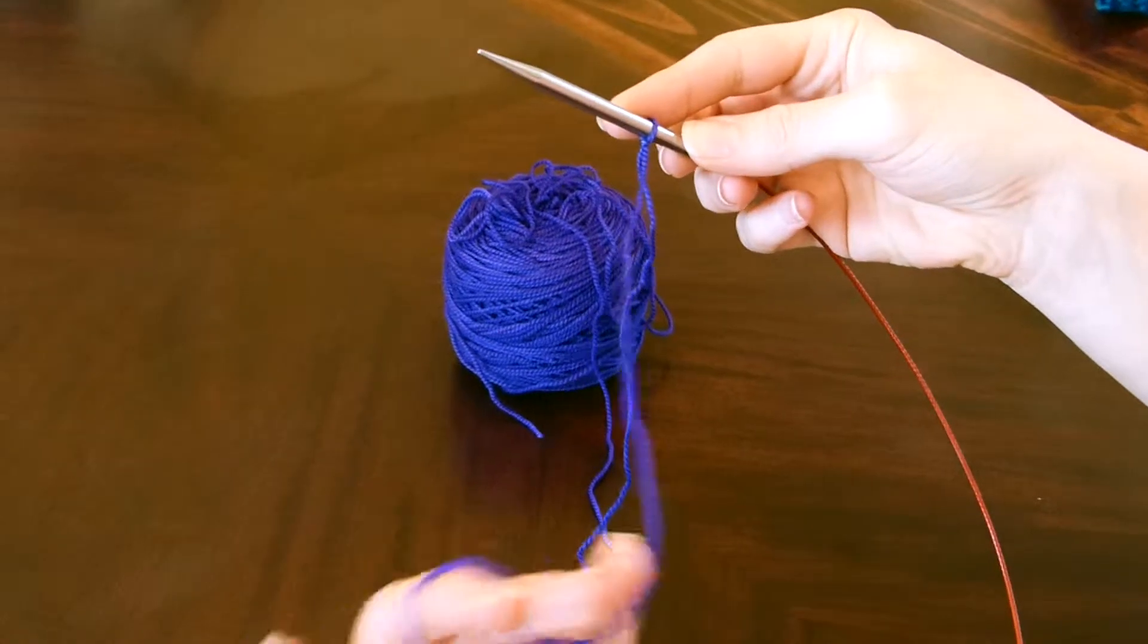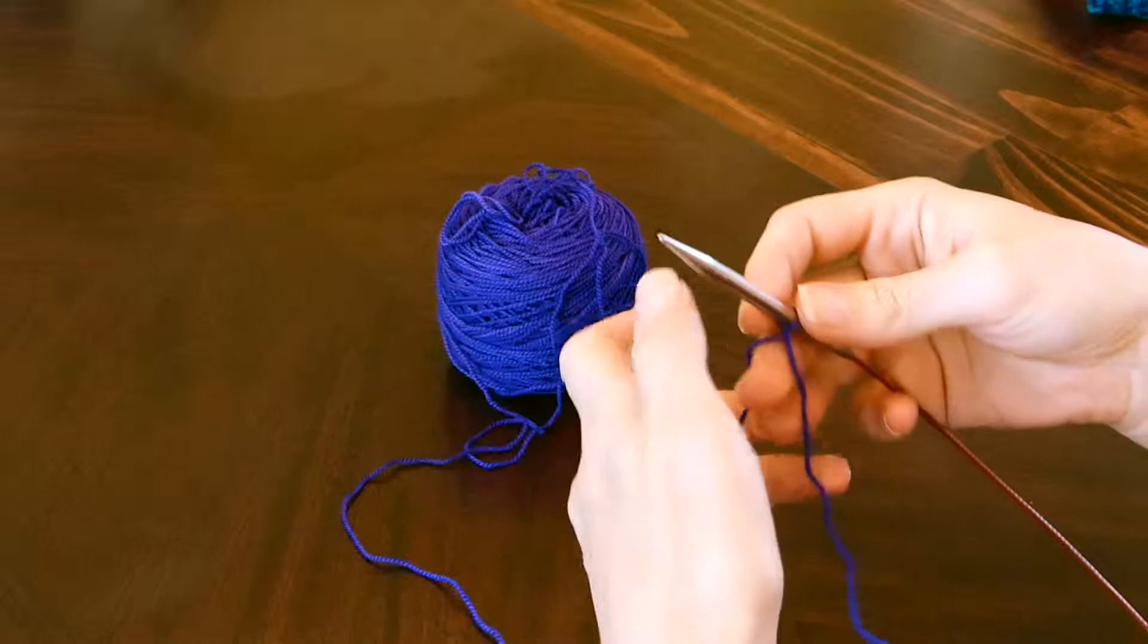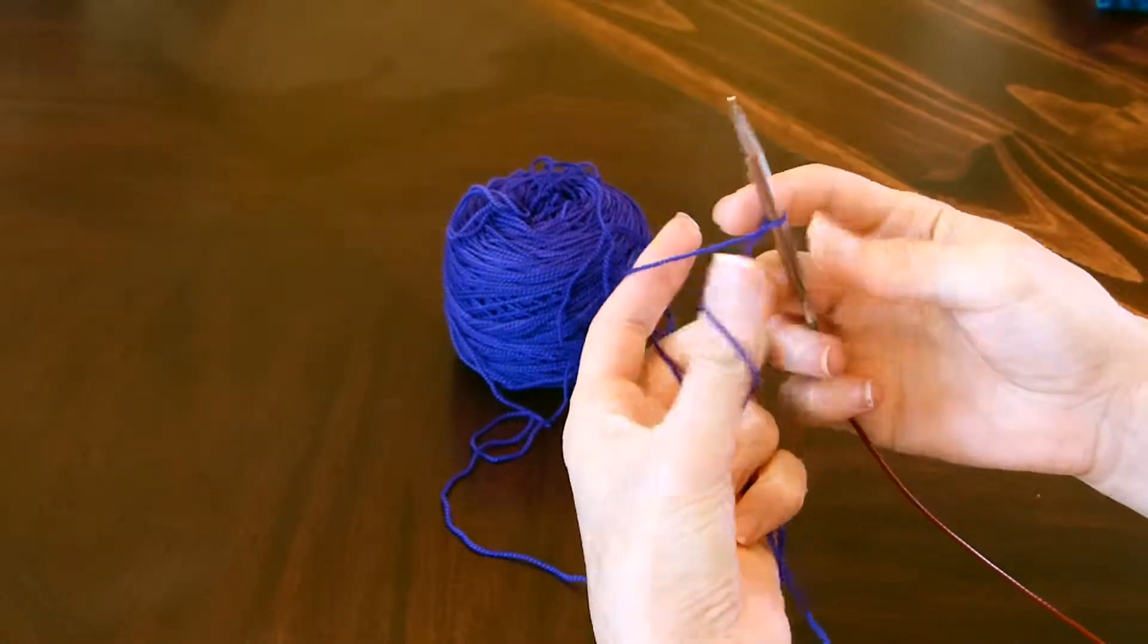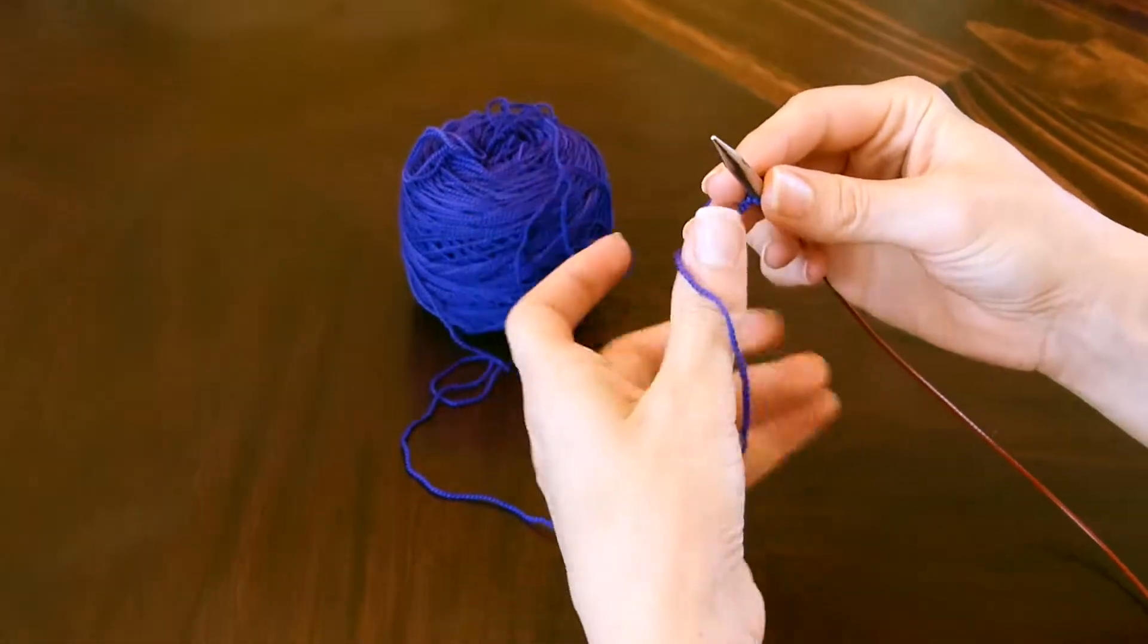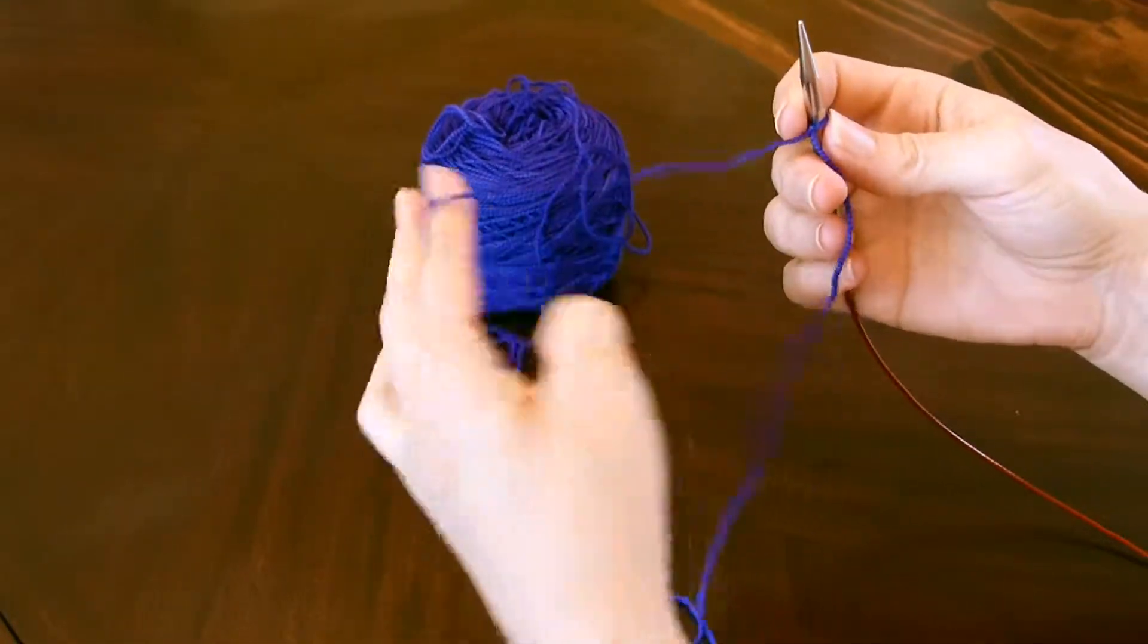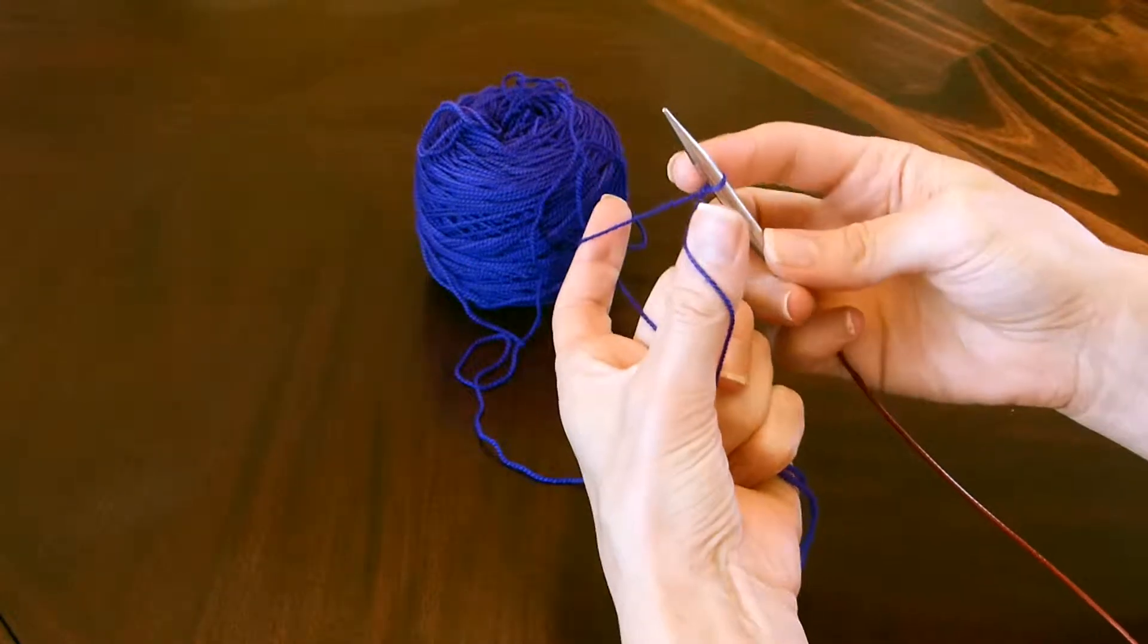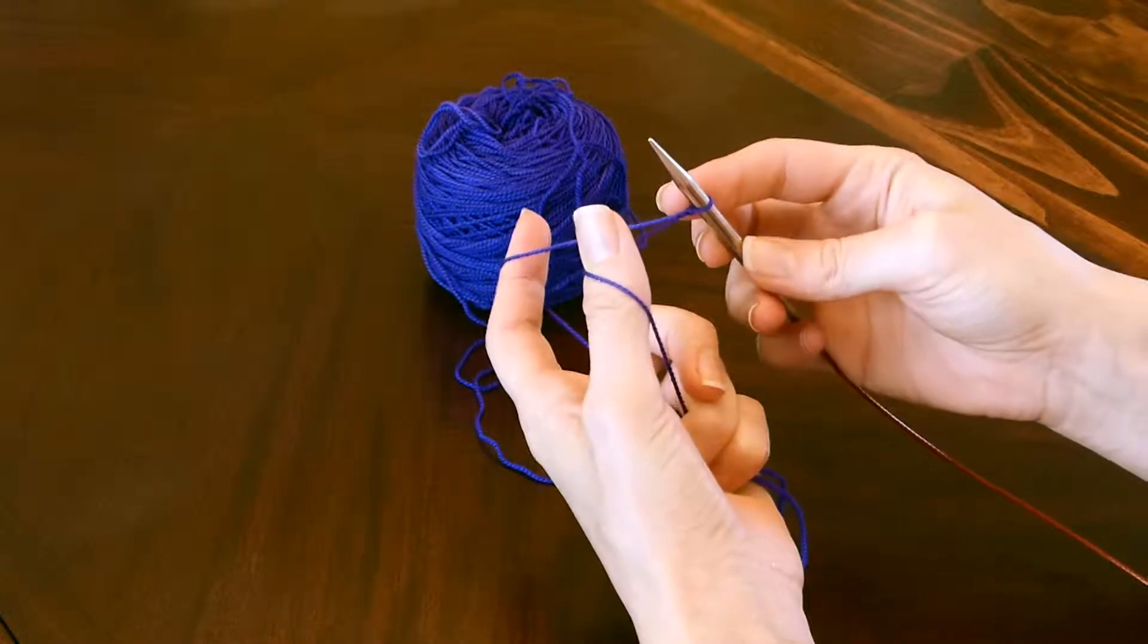This is the short end of the yarn, and this is the rest of the yarn. What I'm going to do is wrap the short end around my thumb, and the long tail around my forefinger or pointer finger.